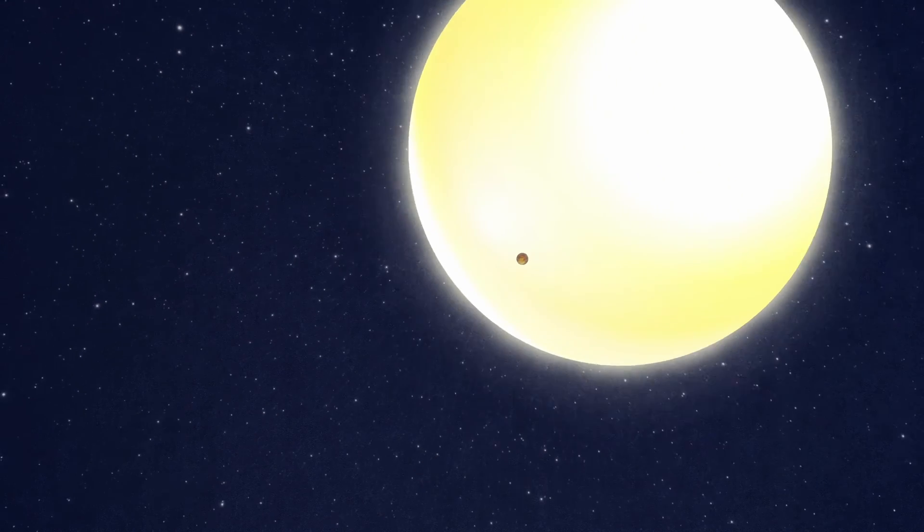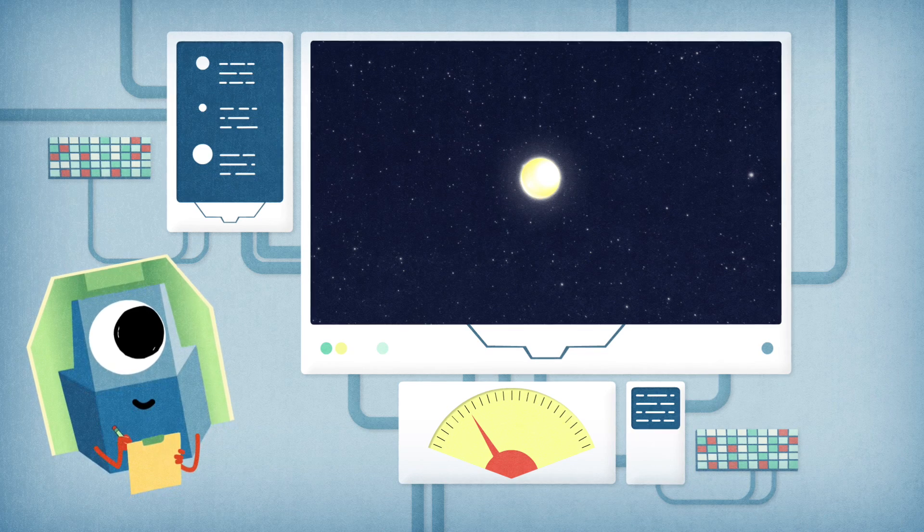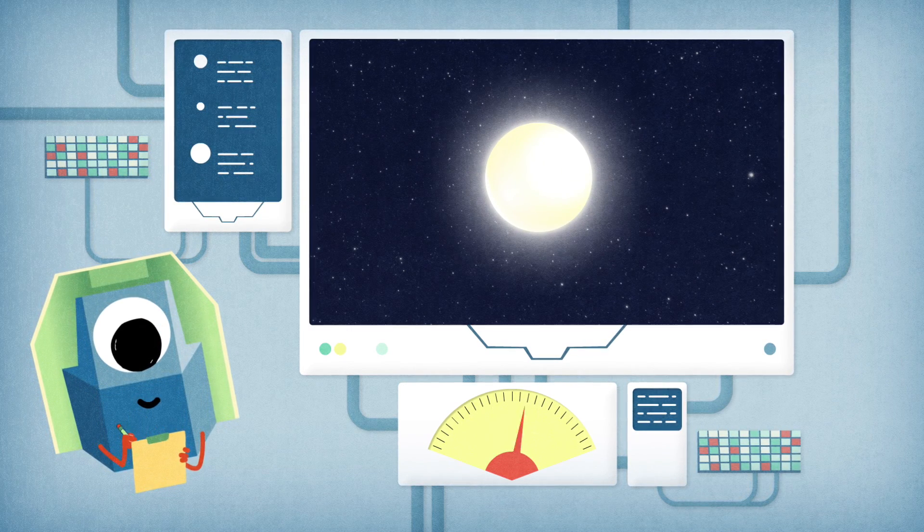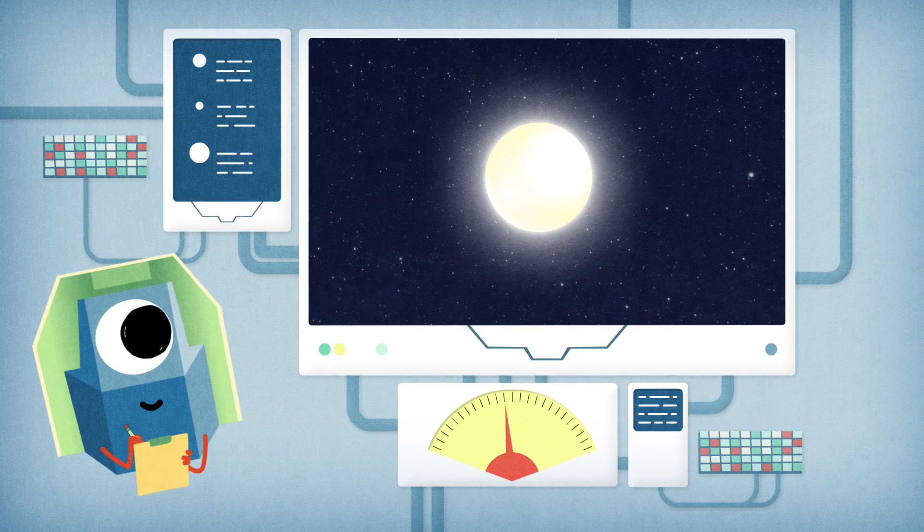Because exoplanets are very hard to see directly, hidden by the bright glare of the stars they orbit, astronomers mostly do not try to do it. Neither will CHEOPS. Instead, it will look for the effects those planets might have in the light coming from the stars they orbit.